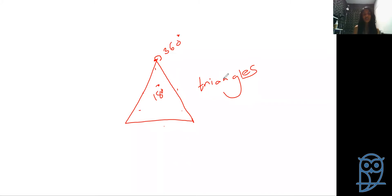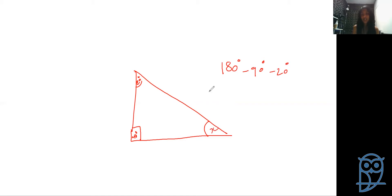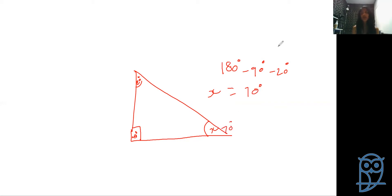We can use this to calculate an unknown angle of a triangle if we know the other two. For example, if one angle is 90 degrees and another is 20 degrees, we work it out as 180 degrees minus 90 degrees minus 20 degrees. So x equals 180 minus 90, which is 90, minus 20, which gives us 70 degrees.